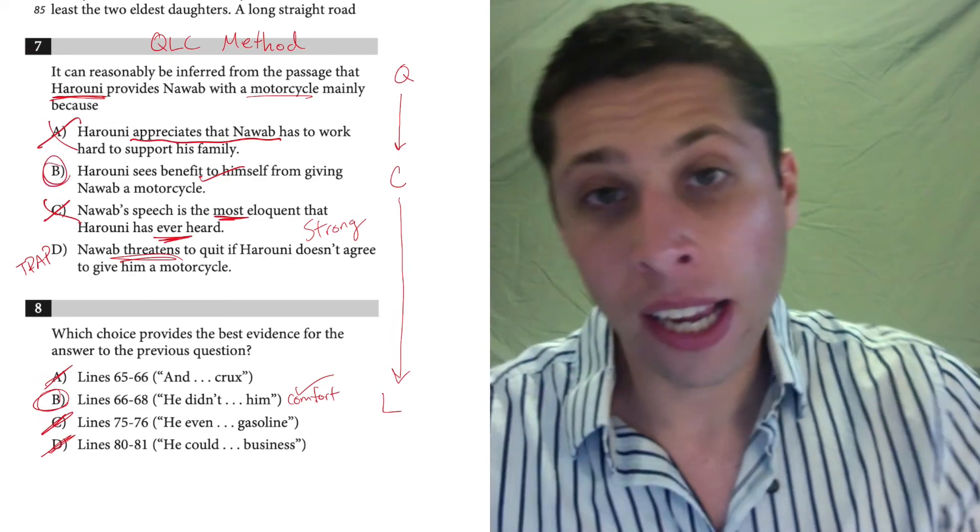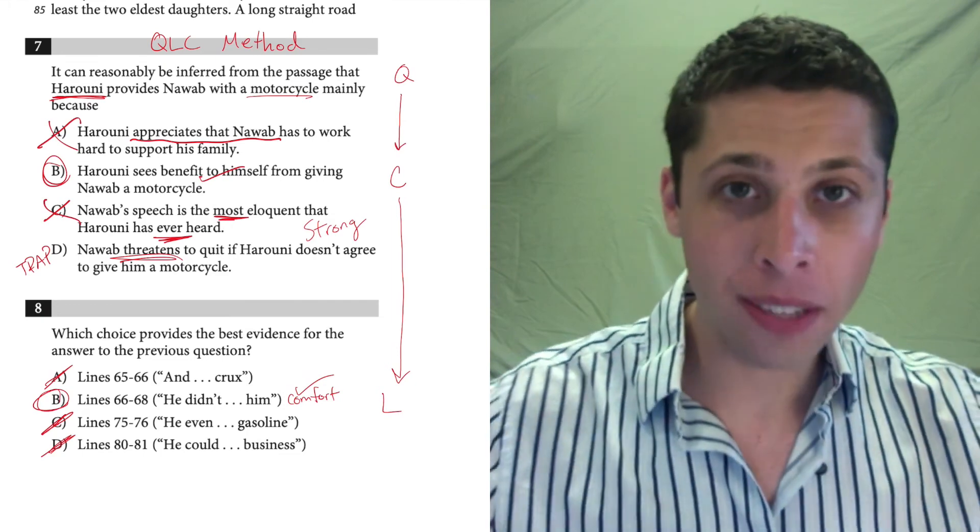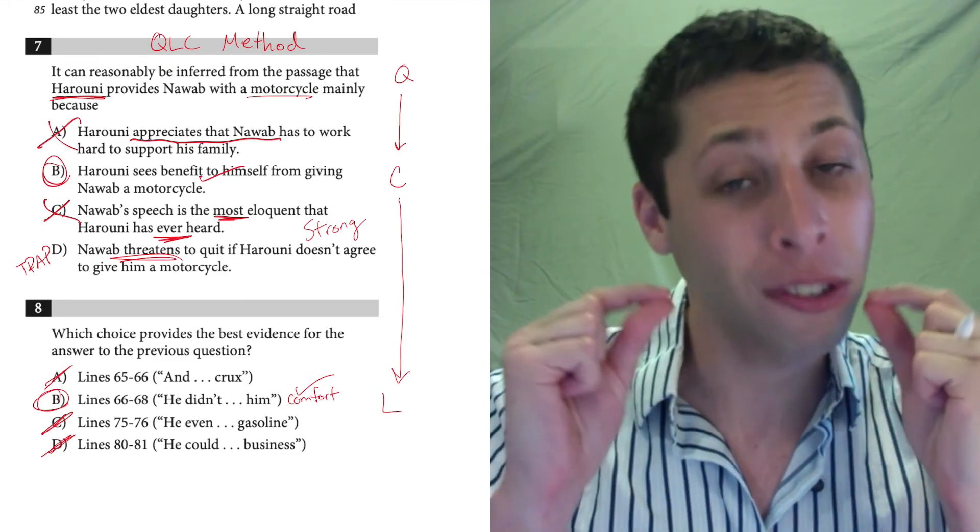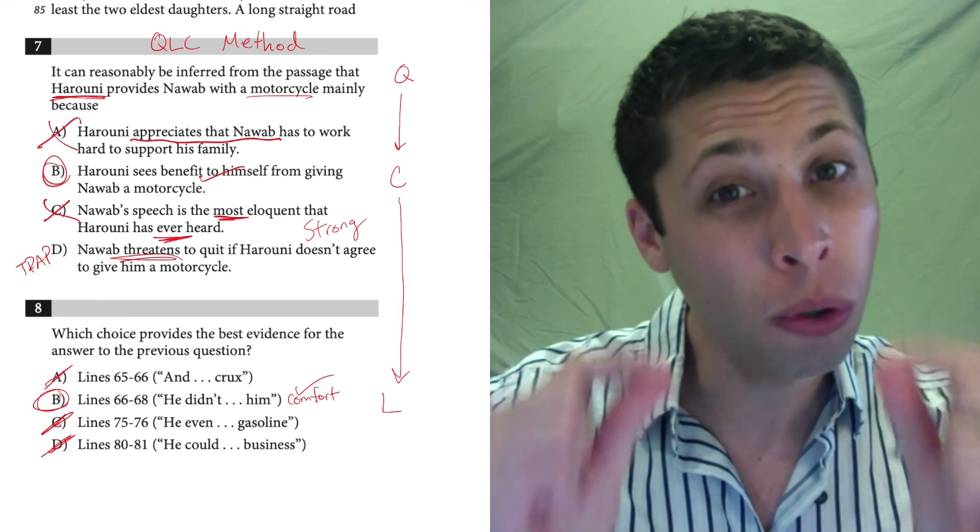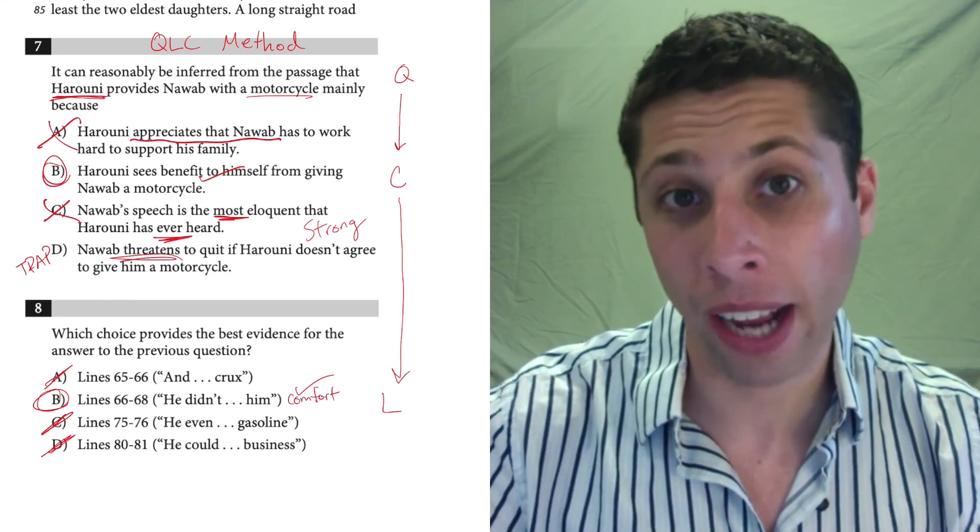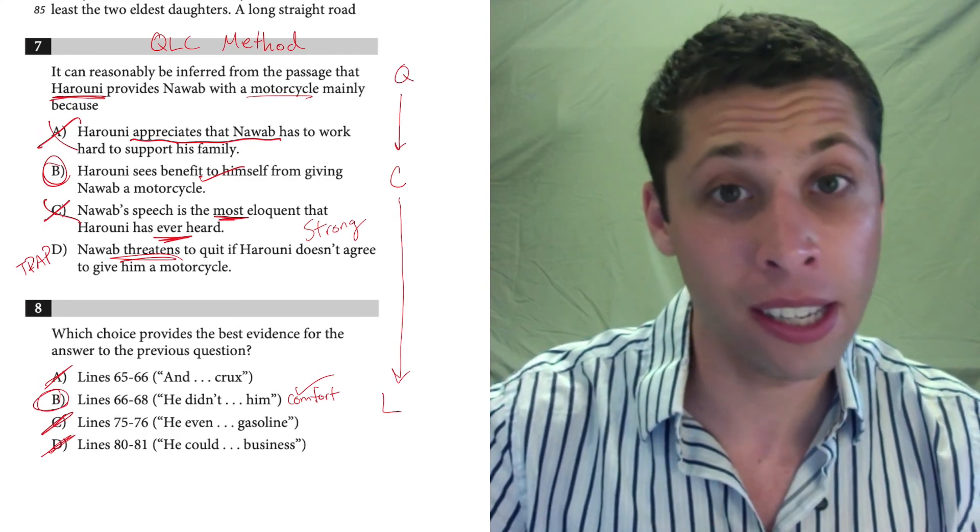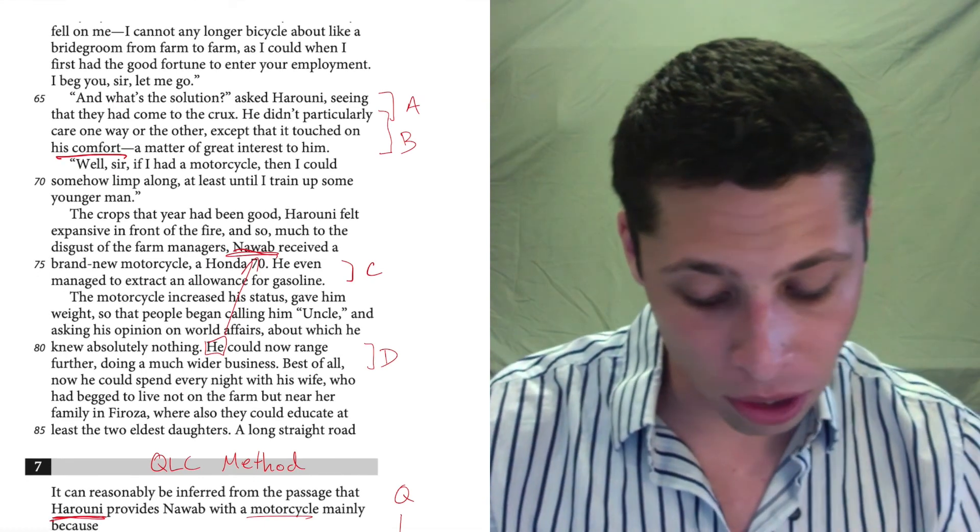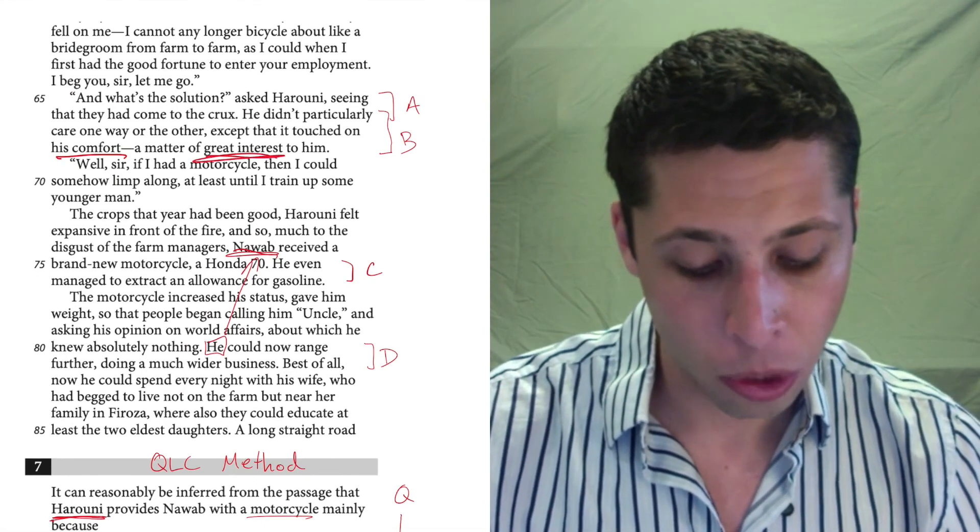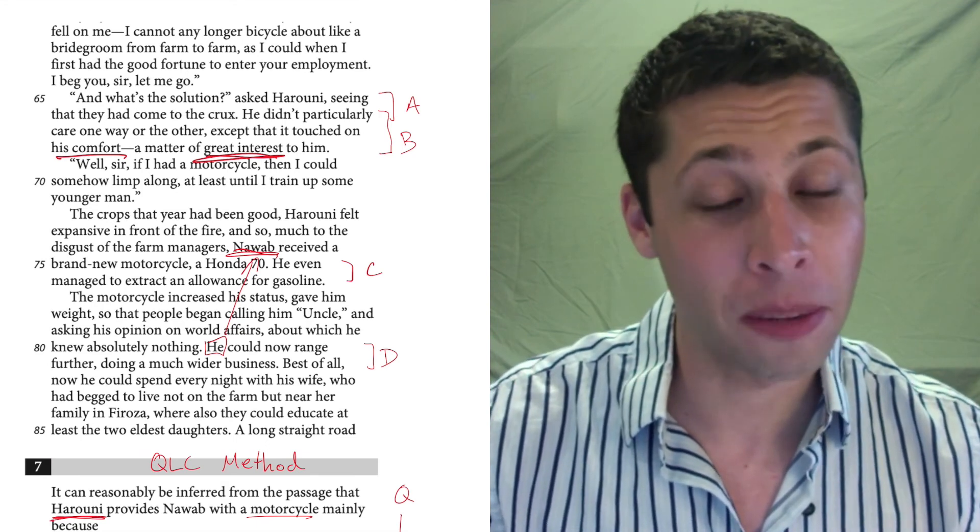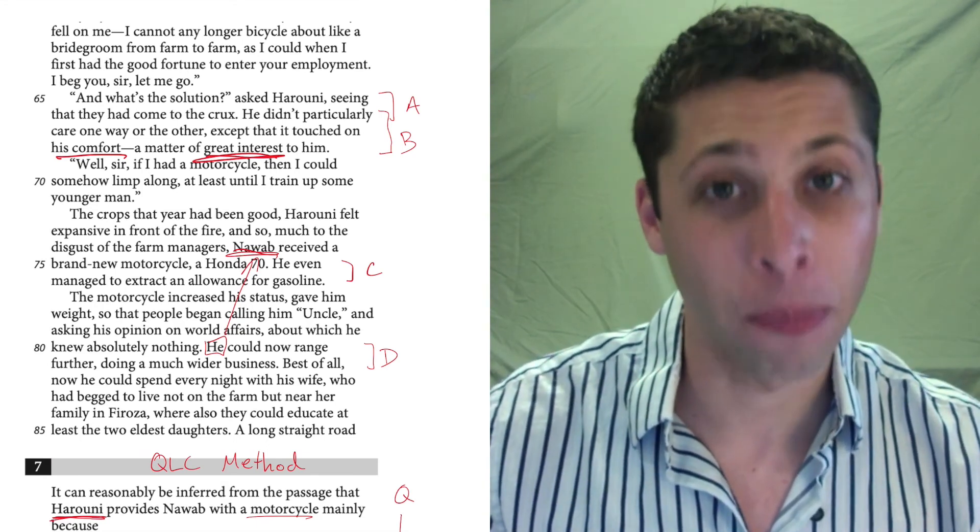So, B is correct because it matches with my line reference evidence and it answers the original question. What does Haruni think? What is Haruni's point of view here? We need to make sure we keep track of the right person. This is about Haruni and what he is deciding. And he's deciding based on his own comfort, which is of great interest to him. Tough question, but the QLC method keeps us organized and helps us get the right answer.